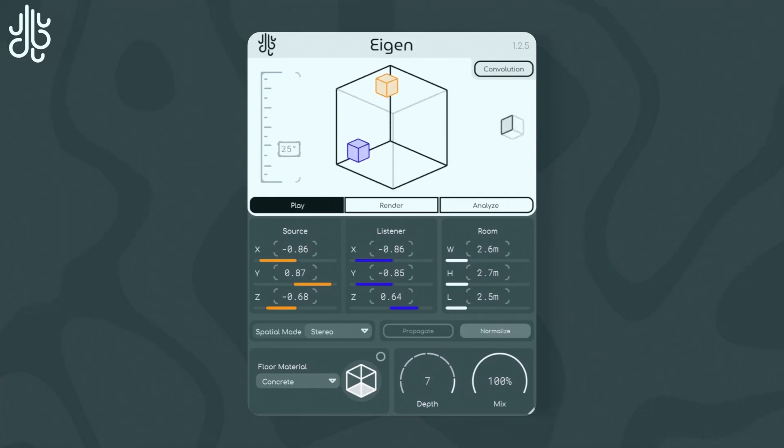Alternatively, you can input the desired location of the source and listener by changing the sliders below, as well as the dimensions of the space.